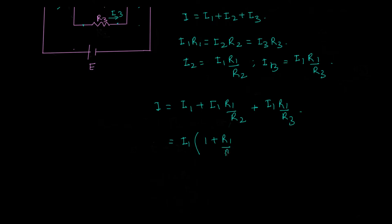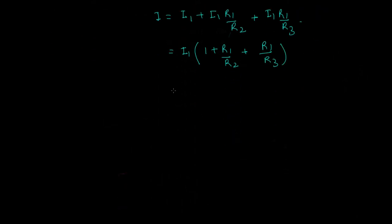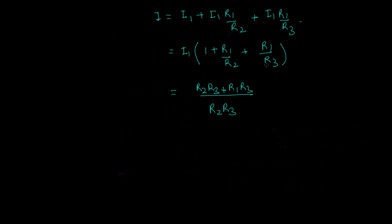Factoring out i1, I get i equals i1 times (1 plus r1/r2 plus r1/r3). Taking the common denominator r2·r3, this becomes r2·r3 plus r1·r3 plus r1·r2 — all over r2·r3.